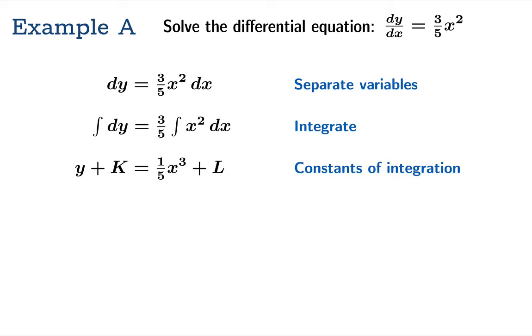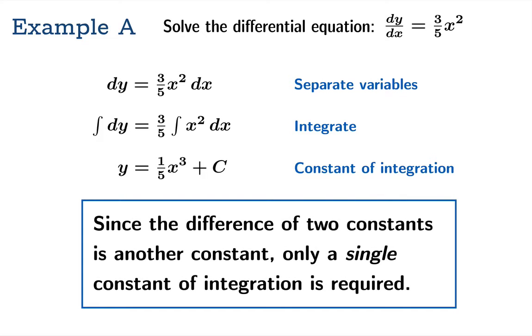But this is overkill because we could subtract off one constant from both sides and get a new constant. Since the difference of two constants is just another constant, we only ever need a single constant of integration when executing separation of variables.